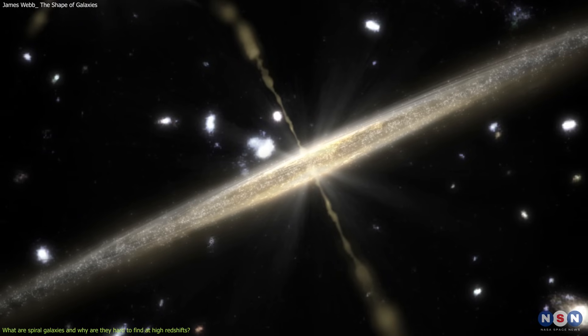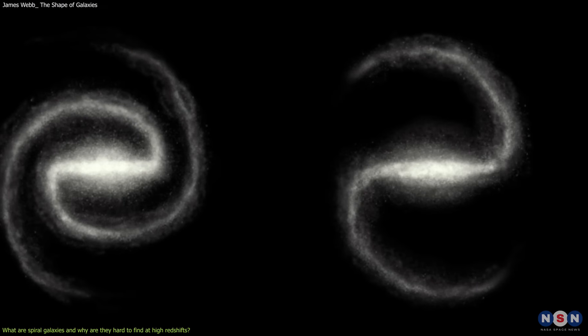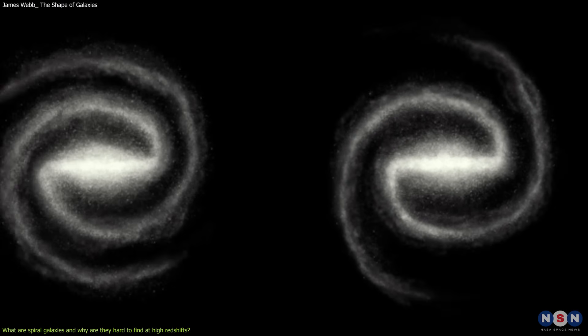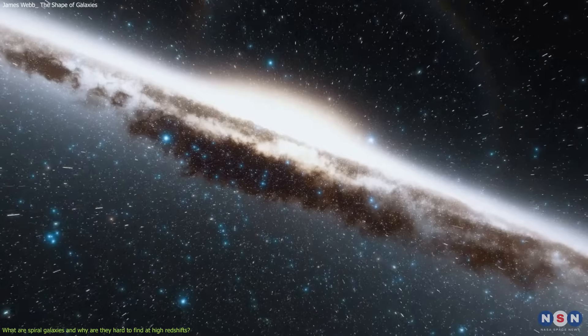Some spiral galaxies are very flat and thin, while others are more puffy and thick. Some have two arms, while others have more or less. Some are blue, while others are red. Some are face-on, while others are edge-on.